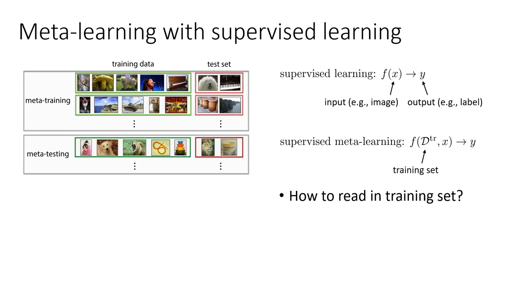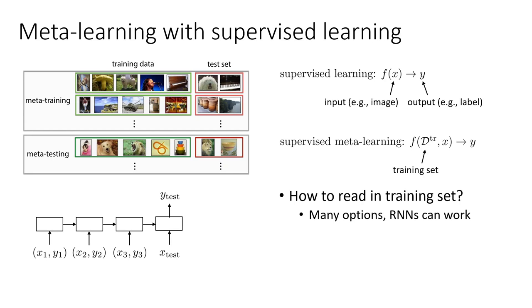Of course, you have to resolve a few questions if you want to instantiate this. For example, how do you read in the training set? There are many options for this. Things like recurrent neural networks or transformers can work pretty well for this. You could imagine a recurrent neural network that reads in x1, y1, x2, y2, x3, y3, which are the training image label tuples, then reads in the test image x_test, and then predicts the test label y_test. So you have this little few-shot training set, a test input, and a test label. We'll talk more about the specifics of this later.